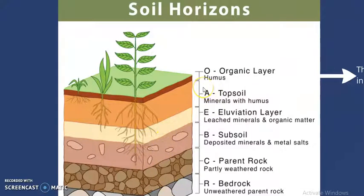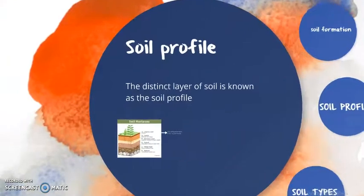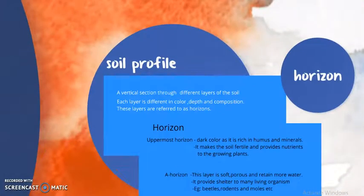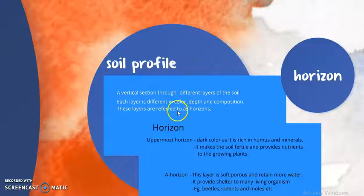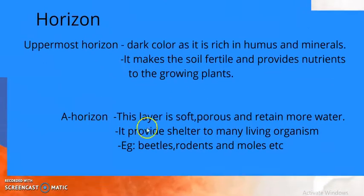Based on that, the soil is classified into the top soil, which contains a large amount of humus, then the A layer, B horizon, and C horizon. Soil profile is the vertical section through the different layers of the soil. Each layer will be different in color, and as we go down, the composition and color of the soil will change. These layers are called horizons.